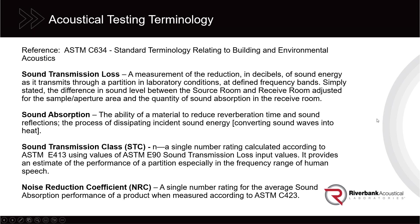First: sound transmission loss. When we say sound transmission loss, we are referring to the ability of a flat wall, door, window, or panel to block sound from transmitting from the source room to the receive room in a laboratory environment. Specifically, it's the difference in the sound level between the source and receive room, adjusted for the sample and aperture area and the quantity of sound absorption in the receive room. This term refers to a laboratory test result.